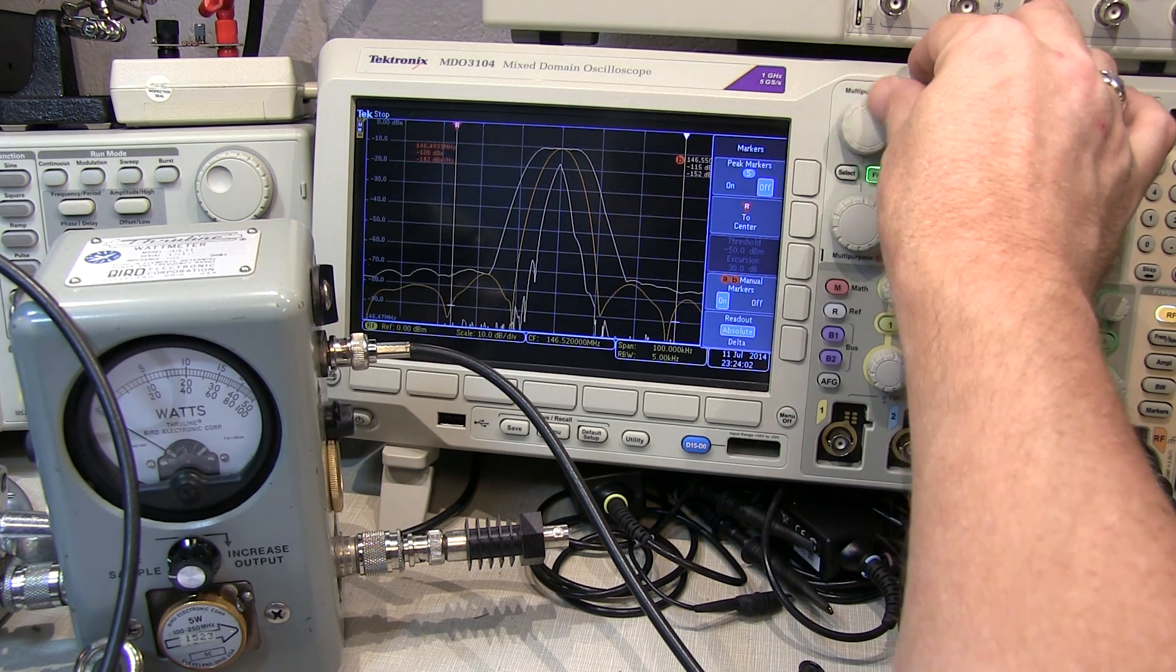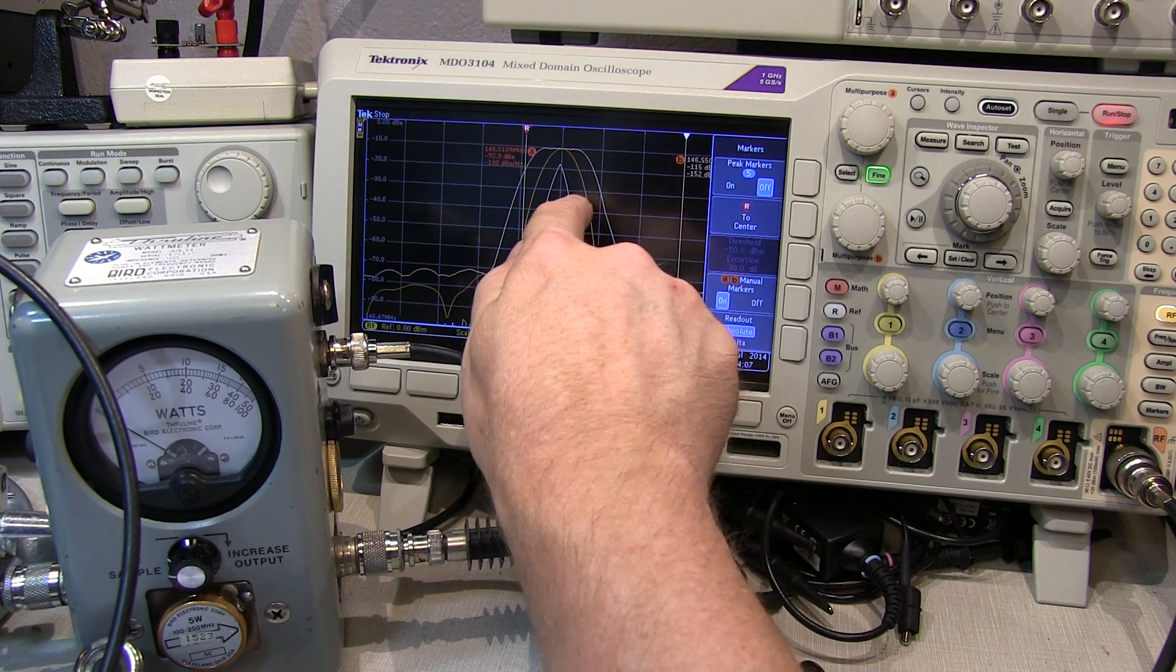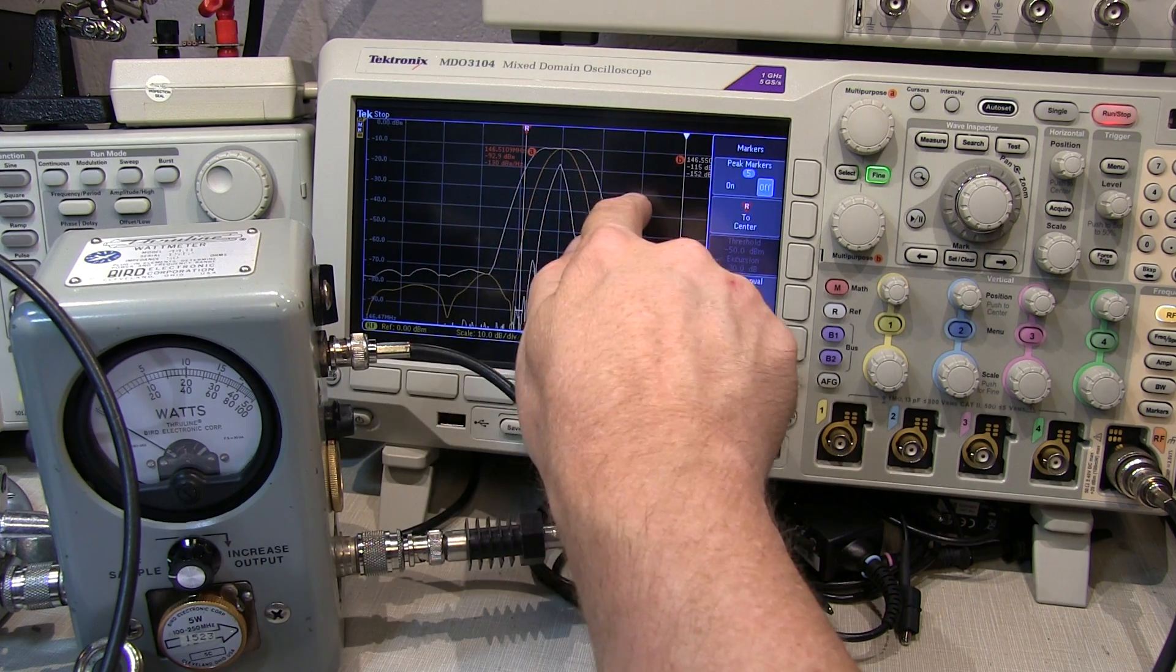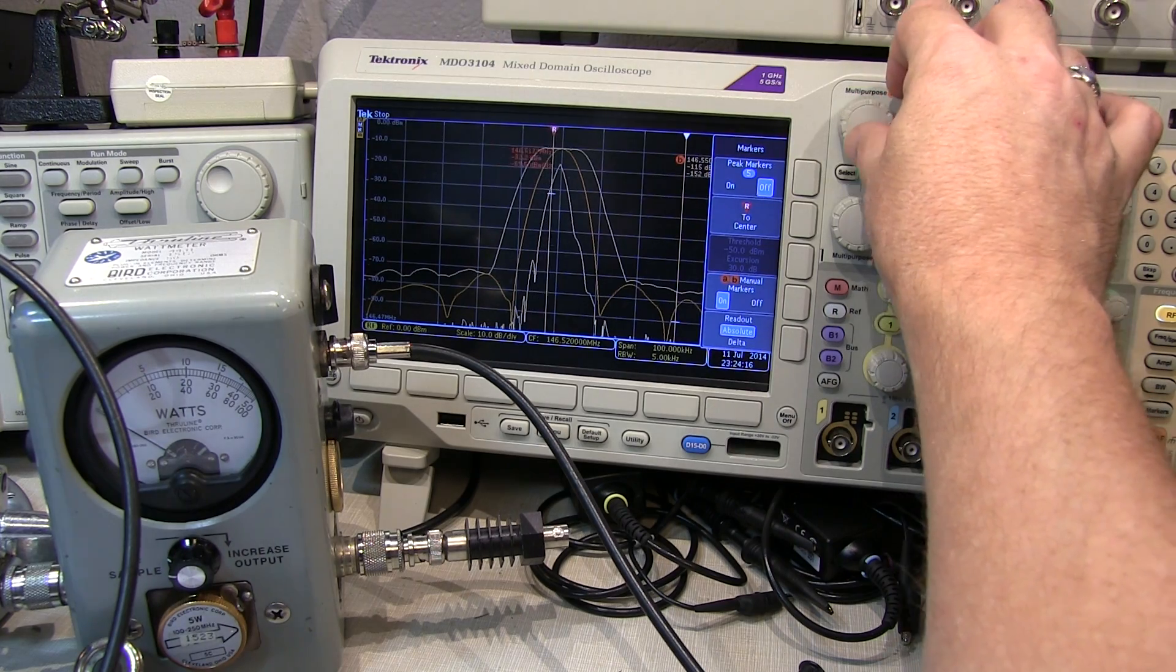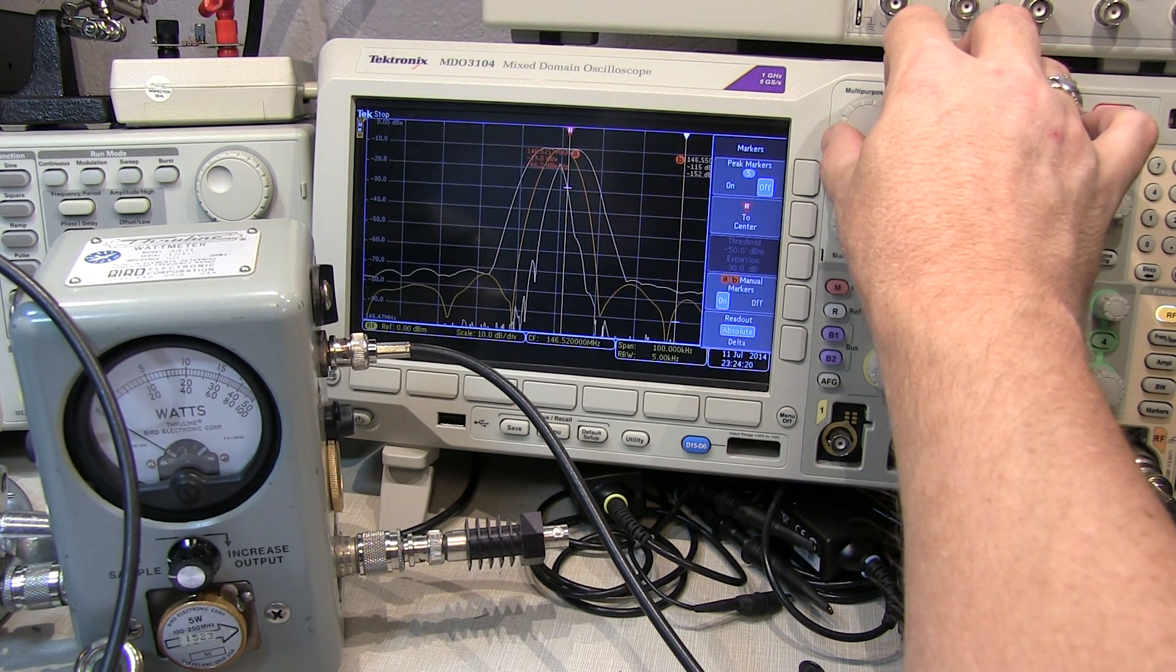What I'll do is move those manual markers to measure the distance from the min hold trace to the max hold trace along a common power level. Let's pick this minus 30 dBm level and move this marker over here until we're right at that crossing level. It's right about there.